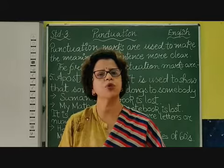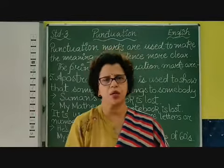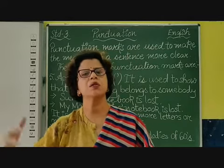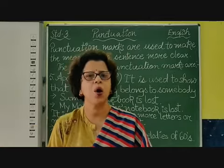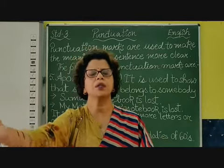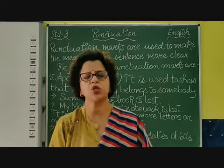So children, you have to use apostrophe when you are showing some possession. It belongs to someone, it is somebody's. This is Mr. Sharma's house, this is my father's car, this is my brother's bicycle. So in this way, when we are showing possession.